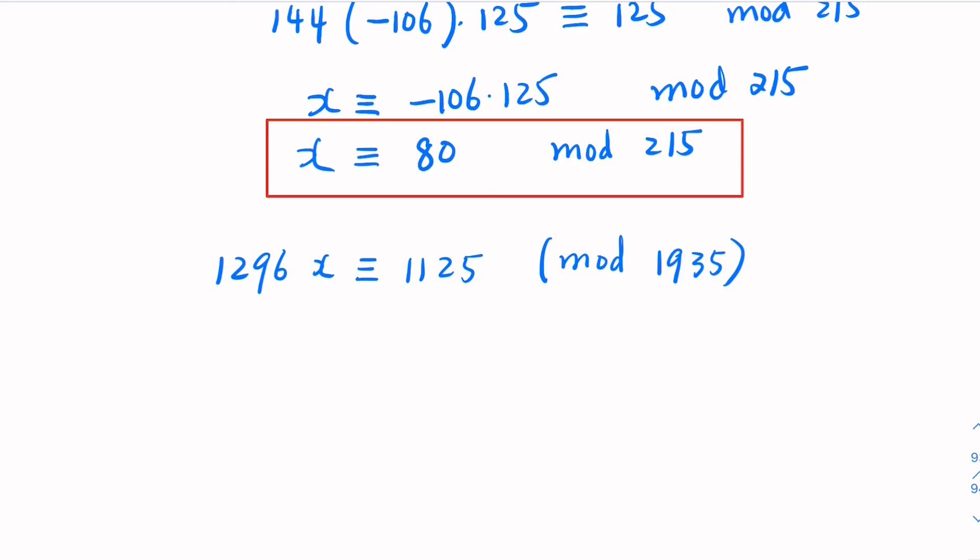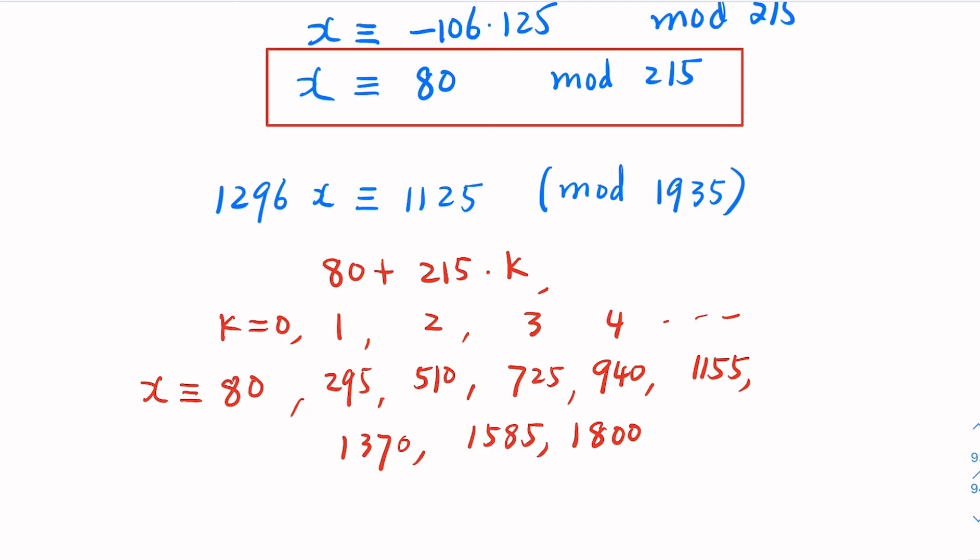The trick here is to understand that this is going to be 80 plus multiple of 215 times k. So, you let k equal 0, you get 80. k equal 1, that's 295. And k equal 2, so this would be 510. And k equal 3, that's going to be 725. That would be 940. And so on and so forth. I'm going to skip the steps. We have 9 different solutions here. And that would be mod 1935. That's the solution.